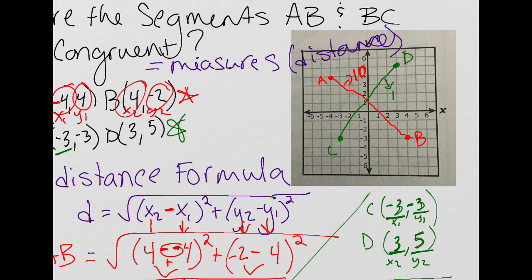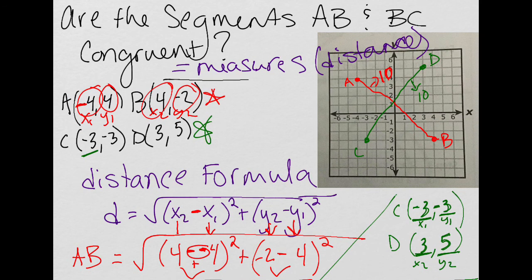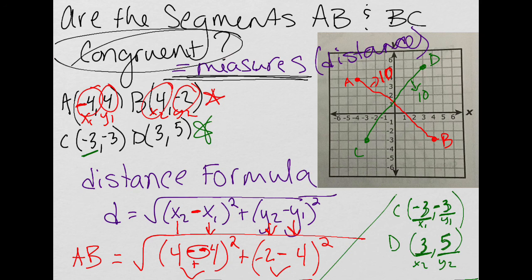And so what we figured out once I did the distance formula correctly that second time, that AB has a length of 10 and CD has a length of 10. So their measurements are equal, which means that these segments are congruent. So the answer: are segments AB and CD congruent? And the answer would be yes.